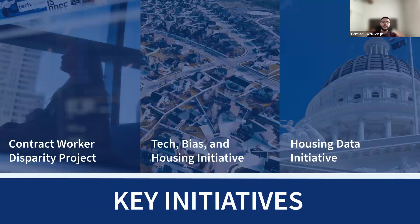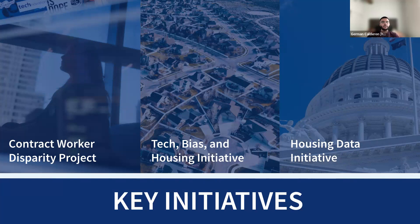Our key initiatives this year include the Contract Worker Disparity Project — a first-of-its-kind, worker-centered initiative that sheds light on the practice of contracting out and advocates for public policy solutions while partnering with companies to adopt responsible contracting practices. Next, the Tech Bias and Housing Initiative examines the promise and perils of housing technology, ensuring technological innovations in the housing space do not reinforce racist housing systems of the past. Finally, the Housing Data Initiative focuses on ensuring good policies are implemented well — enlisting tech workers to build tools that help move us from talk to action.